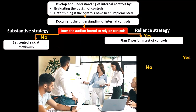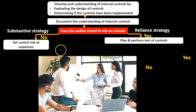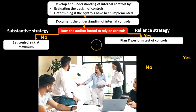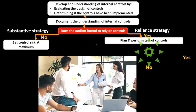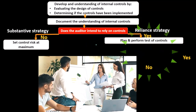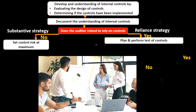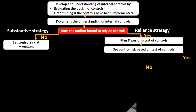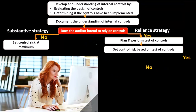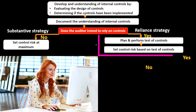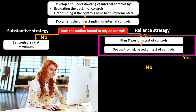We're going to go in and check the checks and balances of the system, depend on it hopefully, and therefore be able to do less actual substantive testing. We'll then set the control risk based on the test of controls.